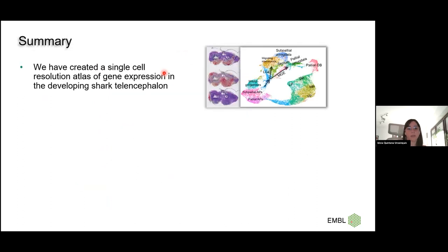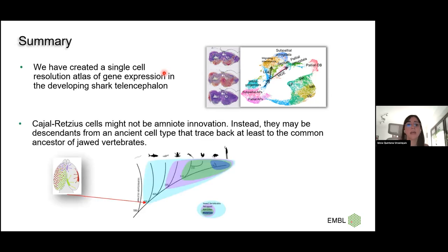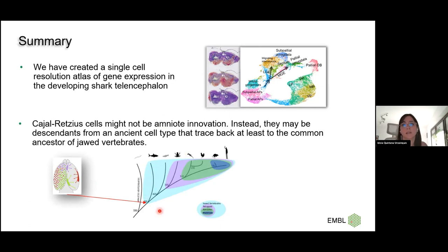To summarize: we have created a single-cell resolution atlas of gene expression in the developing shark telencephalon, both spatial and single-nucleus. Our data strongly suggests that Cajal-Retzius cells are not an amniote innovation, but probably descendants of an evolutionarily ancient type tracing back to the common ancestor of all jawed vertebrates — possibly appearing coincident with brain complexification when predatory behavior arose.